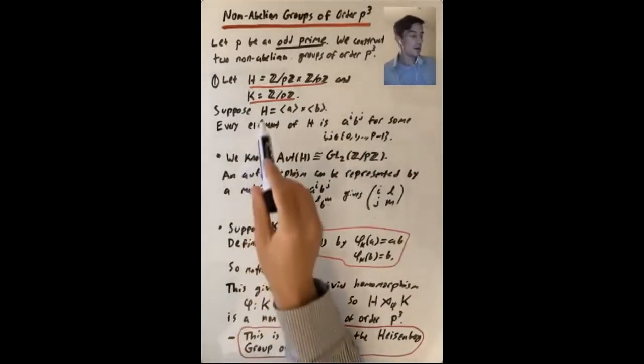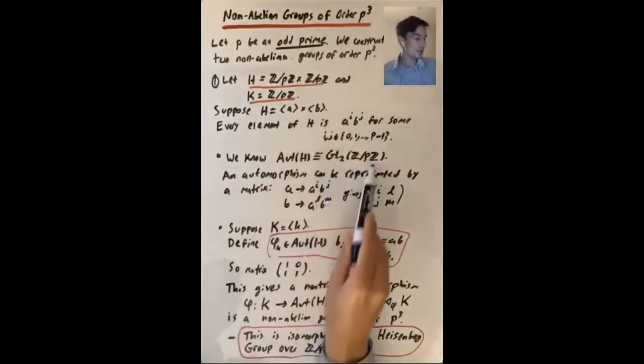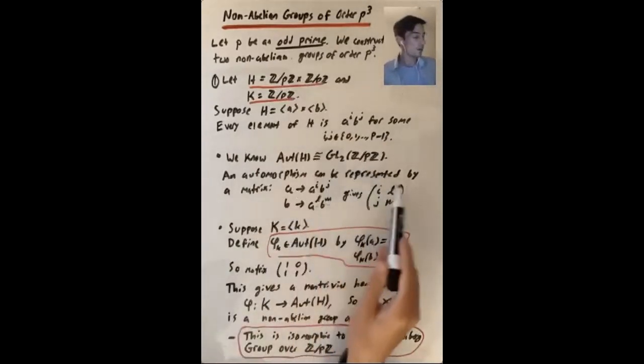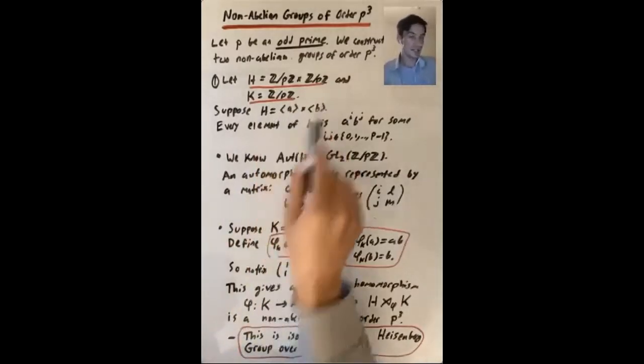We know that the automorphism group of Z mod pZ cross Z mod pZ is GL2 Z mod pZ. And we can make this really concrete by saying that an automorphism can be represented by a matrix.